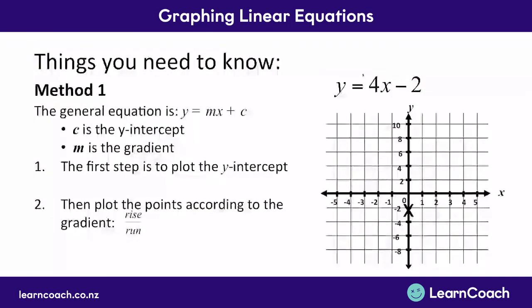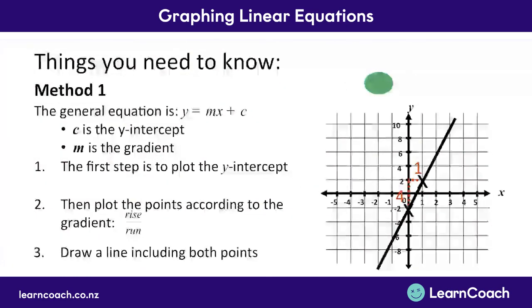Your next step is going to be plotting the rise over run, the gradient. Now that's 4 over 1, because remember, anything we don't know is over 1. So we go up 4, and then across 1. Now that we have our two points, we rule a line through it, and there is our answer.